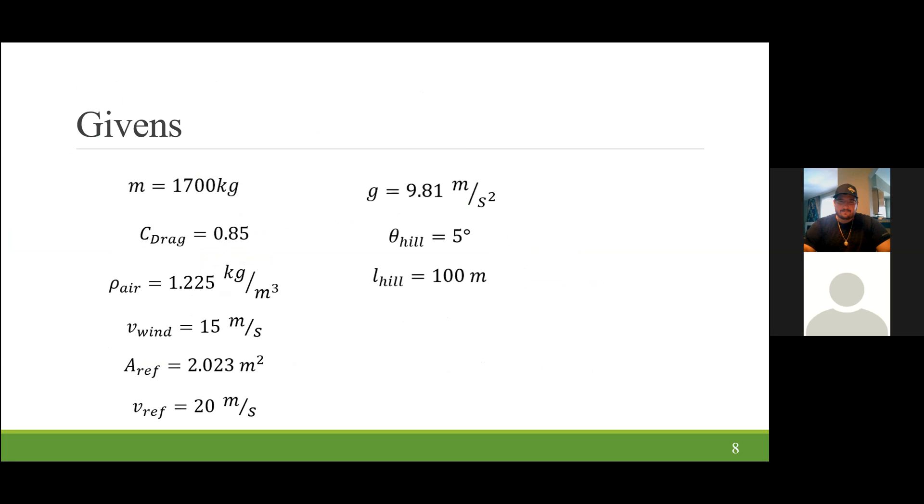The problem we'll be analyzing today is an old truck going up an incline while experiencing headwind. This old truck weighs 1,700 kilograms, has a drag coefficient of 0.85, traveling through air that has a density of 1.225 kilograms per meters cubed. The wind acting on it is moving at 15 meters per second, and the vehicle is traveling at 20 meters per second. The hill that it is climbing has a five-degree grade, and the length of the hill is 100 meters.